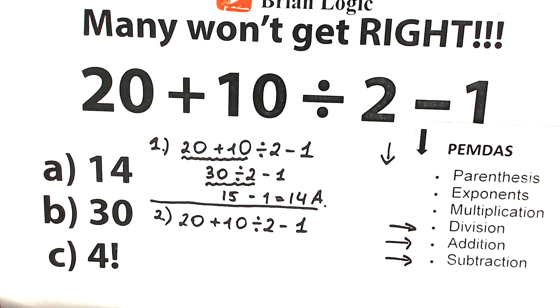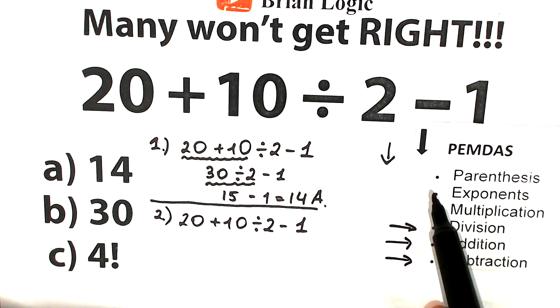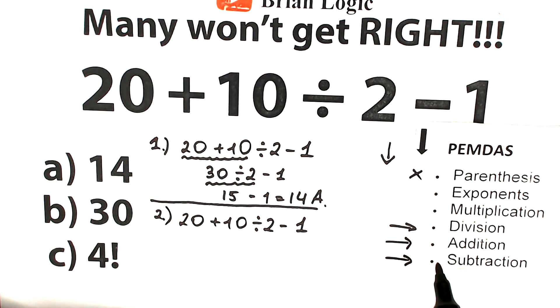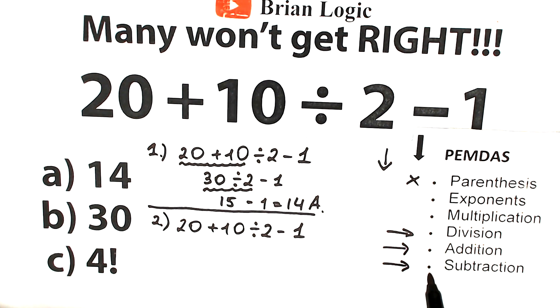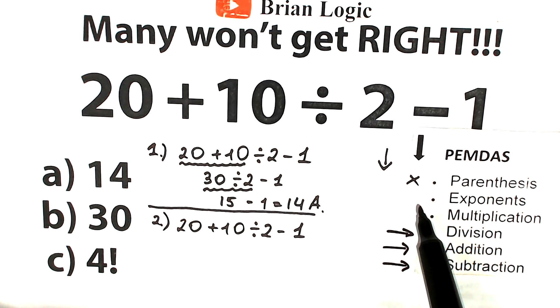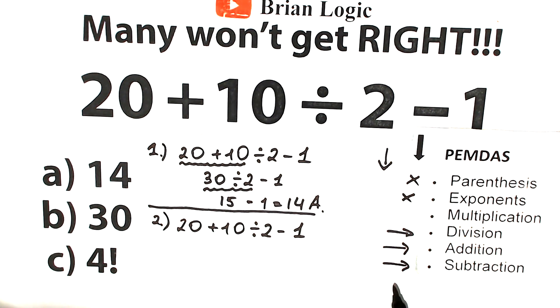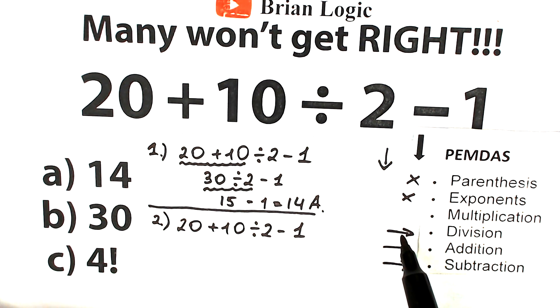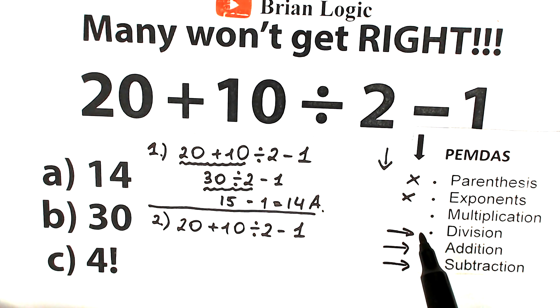As I told before, first we should evaluate parentheses. We don't have parentheses so we skip this part. Secondly we should evaluate exponents. We don't have any exponents so we skip this as well. Third step: multiplication and division group. This is one common group. A lot of students forget about it.